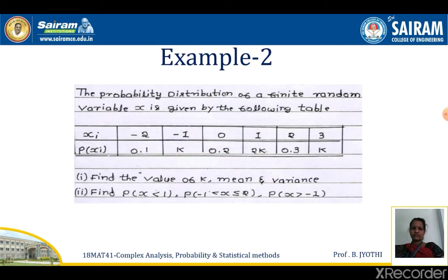Let's see the second example. The probability distribution of a finite random variable x is given by the following table. xi gives −2, −1, 0, 1, 2, 3 and p(xi) gives 0.1, k, 0.2, 2k, 0.3, and k. Find the value of k, mean, variance, and also find: p(x < 1), p(−1 ≤ x ≤ 2), and p(x > −1).